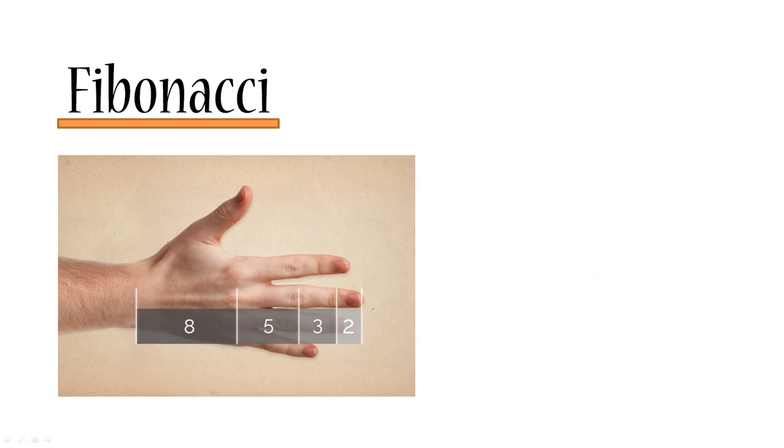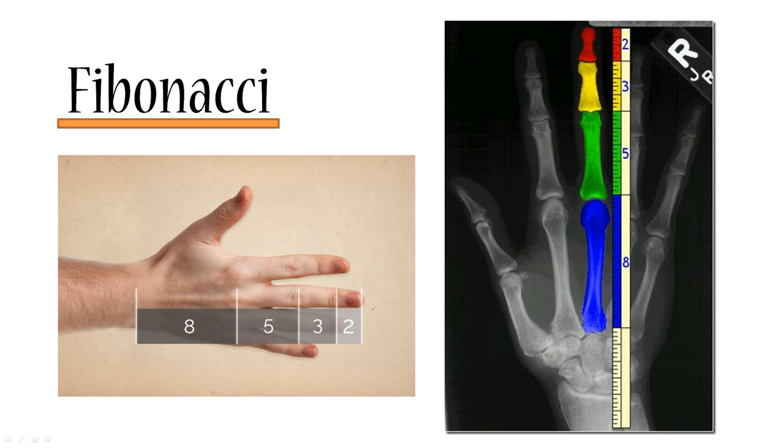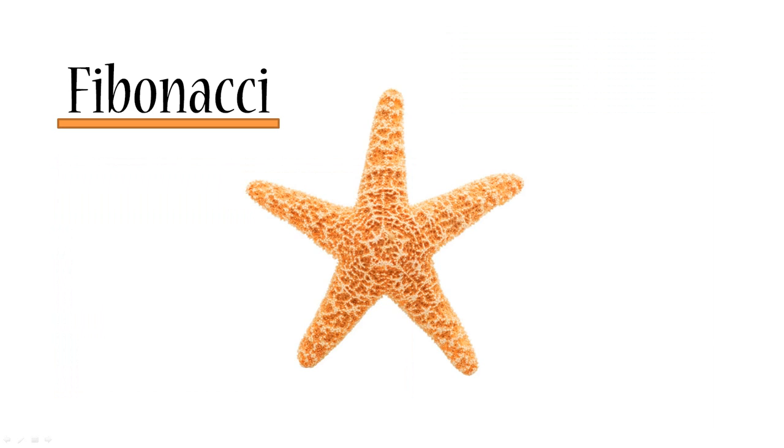Next, your fingers - actually your phalanges on your fingers - are in the same ratio as the Fibonacci numbers: two, three, five, eight. If you don't believe this picture, then here's an actual x-ray. Also, if you take any starfish and you measure its base as one, then the distance between these two limbs will be 1.618.